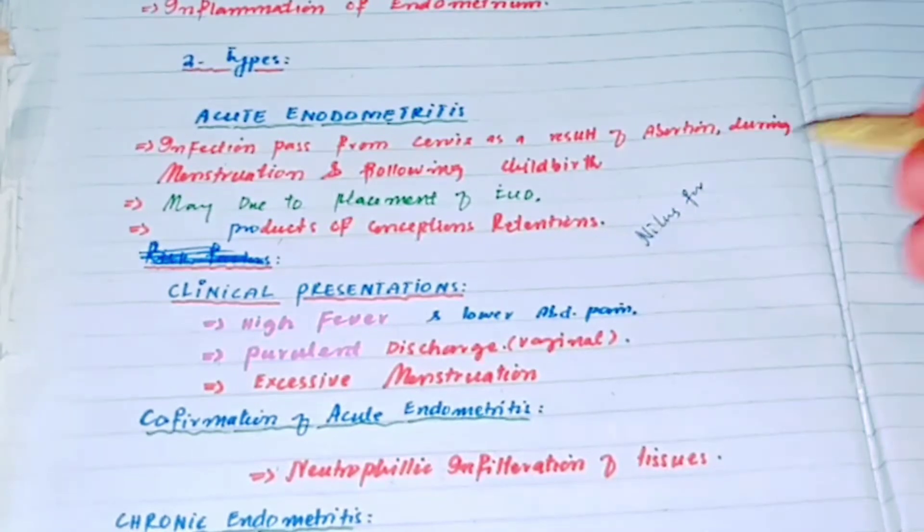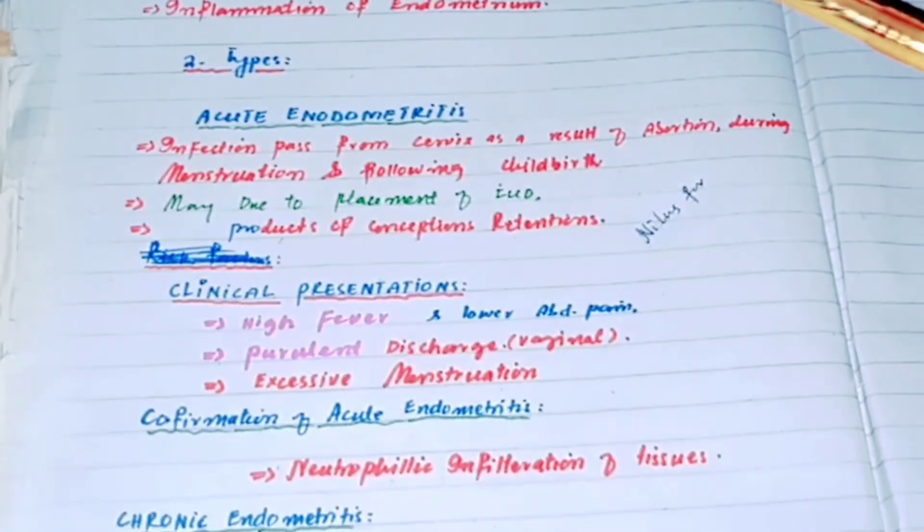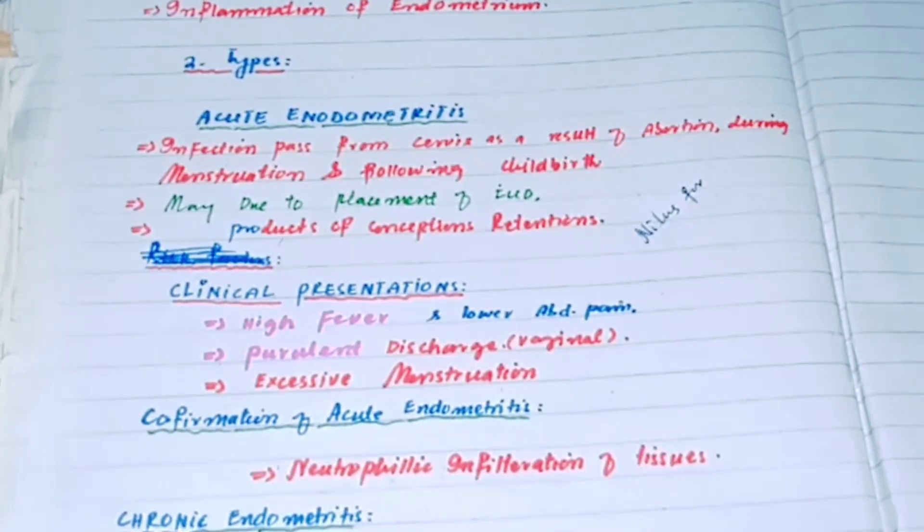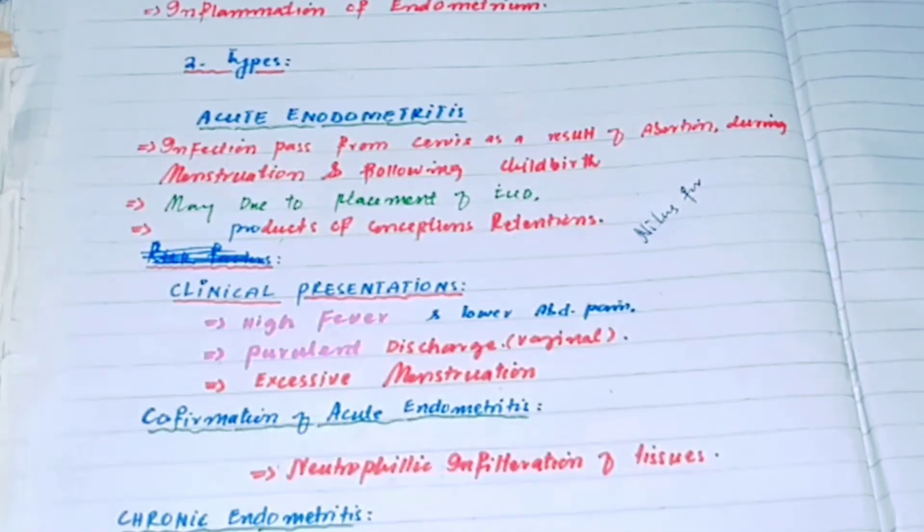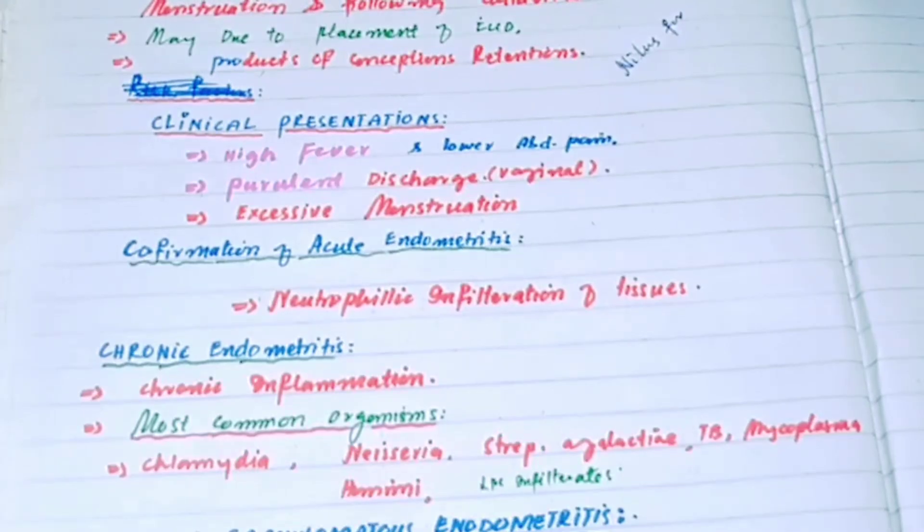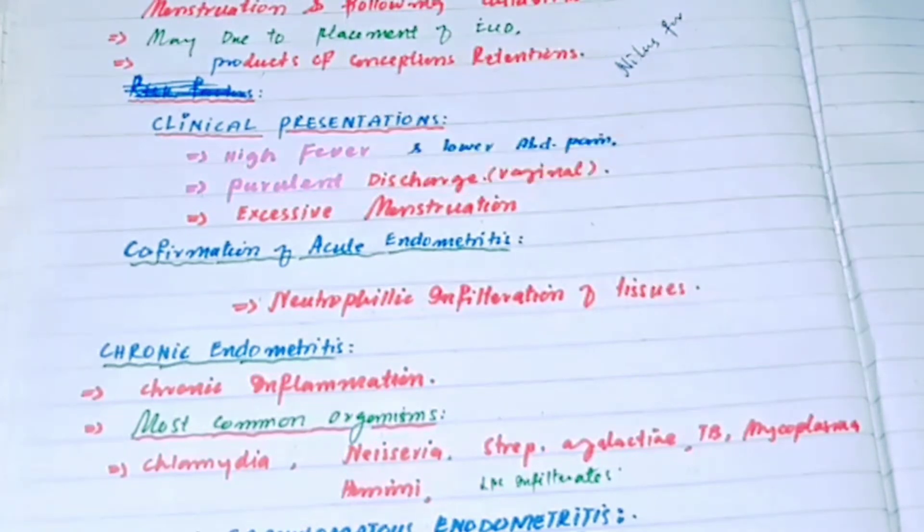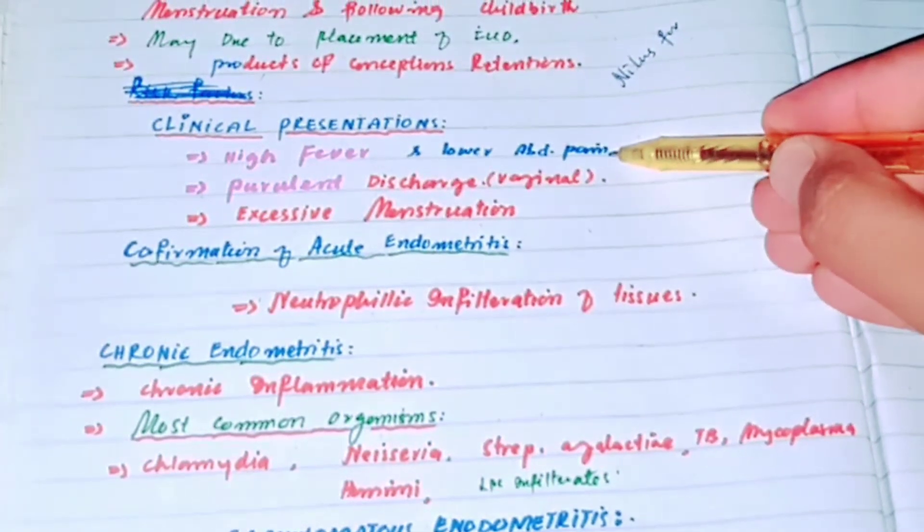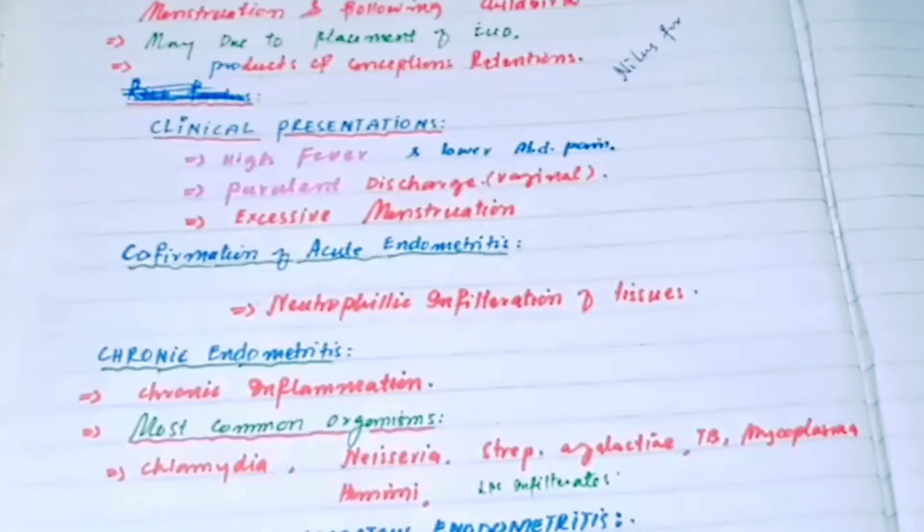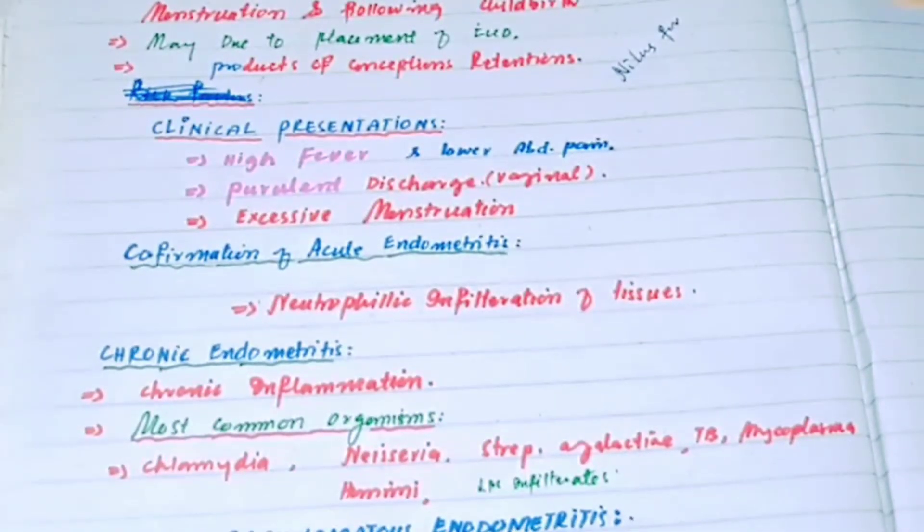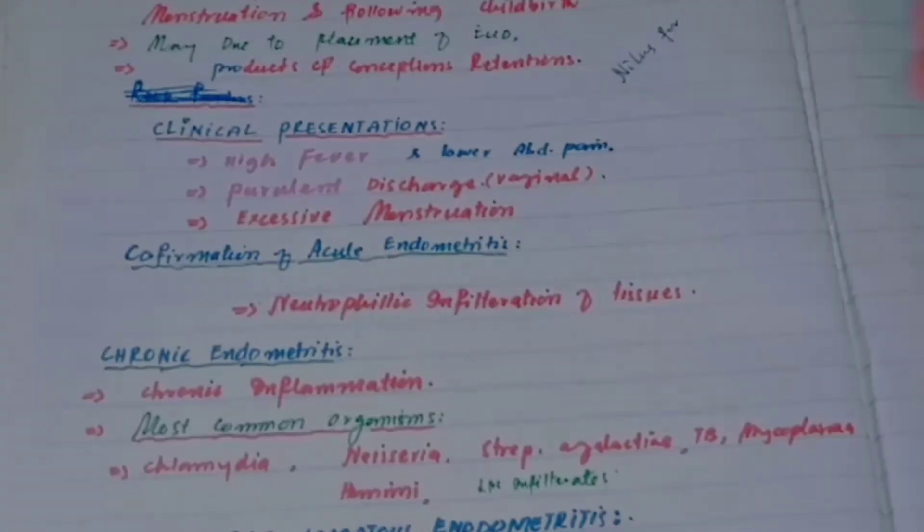What is the clinical presentation? Since it is an infection and inflammation, it will cause high-grade fever, lower abdominal pain, purulent discharge from the vagina, and excessive menstruation.